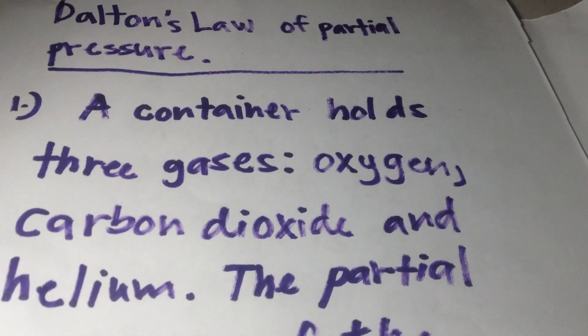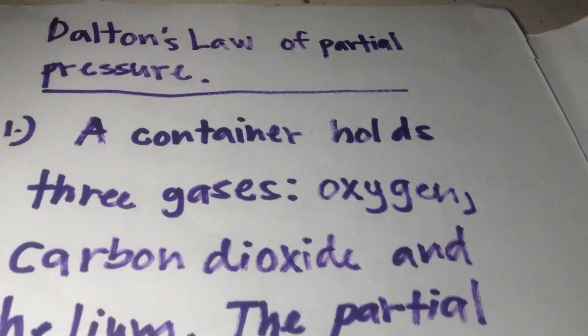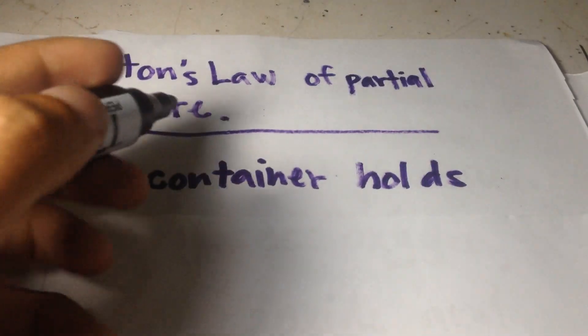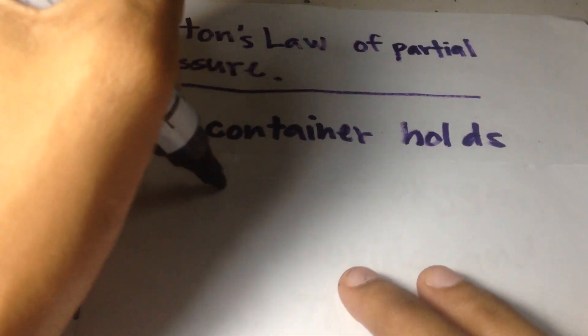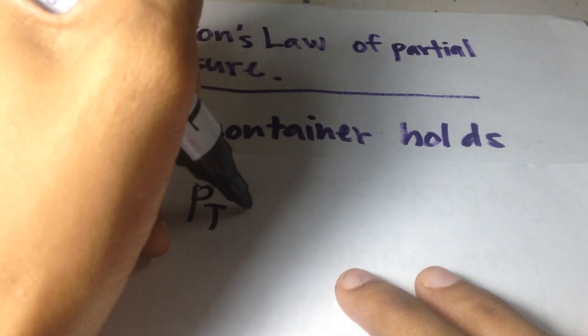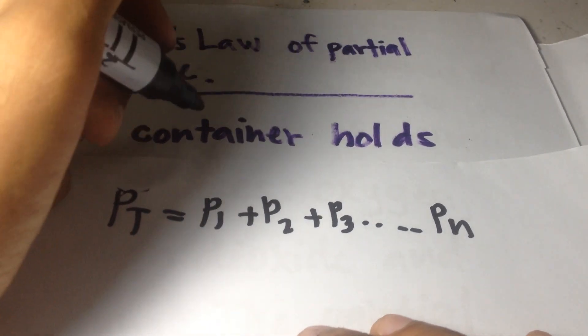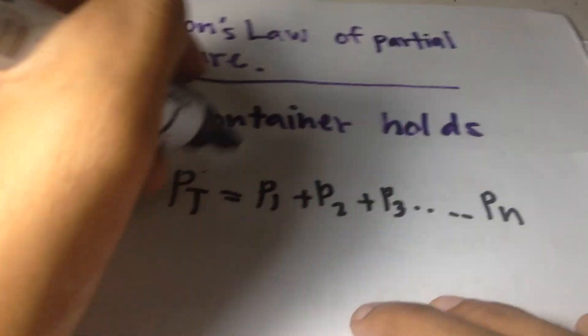So, let's begin. Here is the formula of total pressure from Dalton: P total equals P1 plus P2 plus P3, and so on up to P-n.